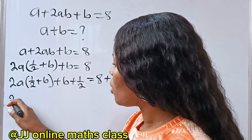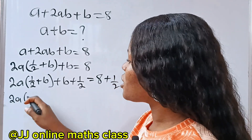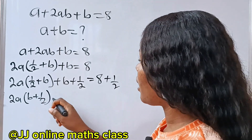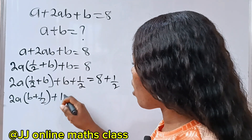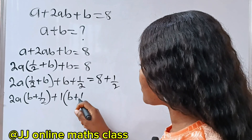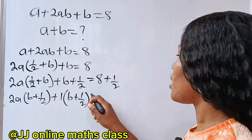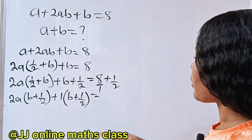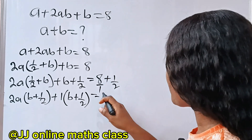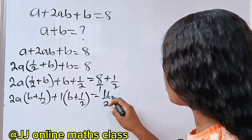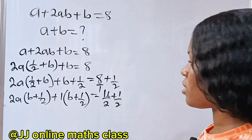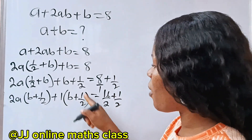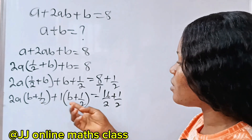Now notice that we can write this as 2a multiplied by (b + ½), plus 1 times (b + ½), is equal to 16 over 2 plus 1 over 2. We have succeeded — we now have the same expression inside both brackets.